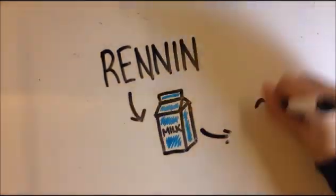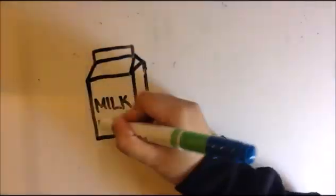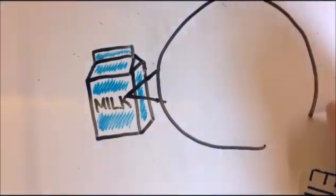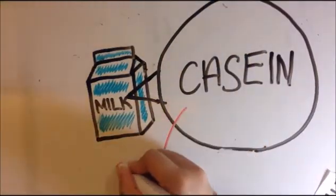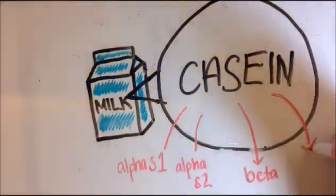These enzymes are used to coagulate the milk which allows the proteins to be digested in the stomach. A protein that is found in milk is casein. There are four types of casein: alpha-S1, alpha-S2, beta, and kappa.